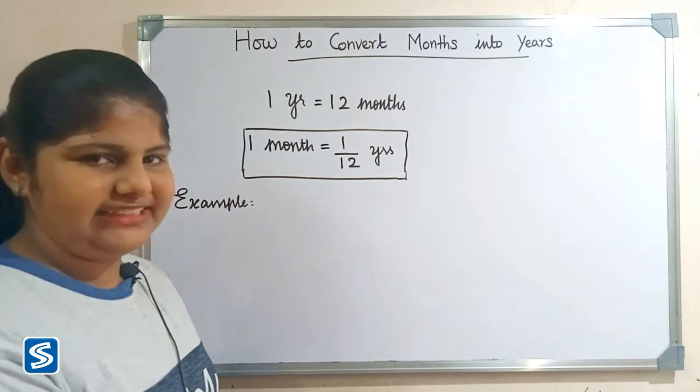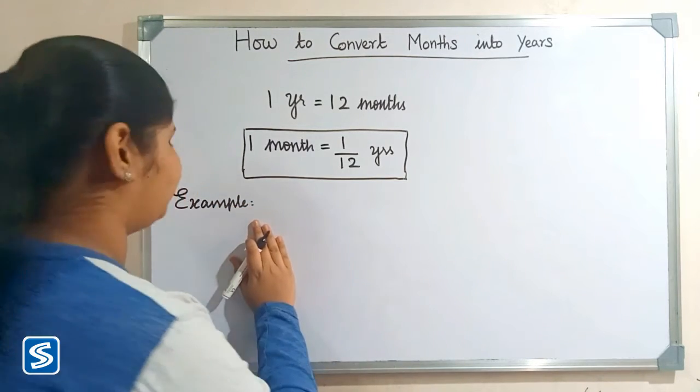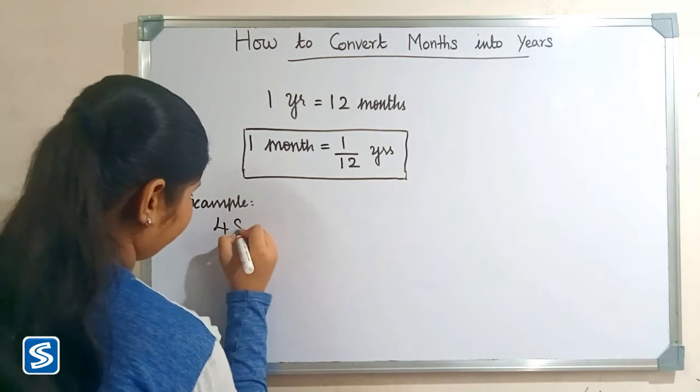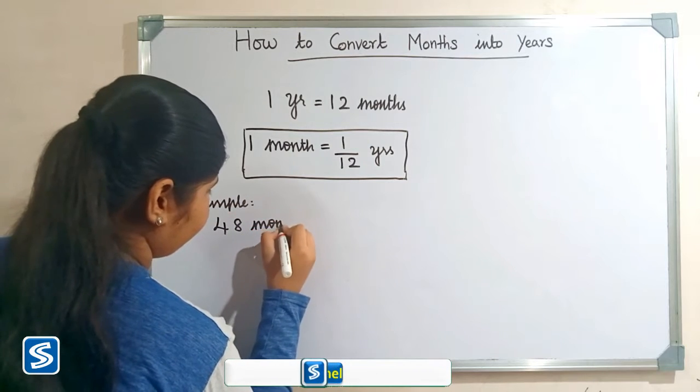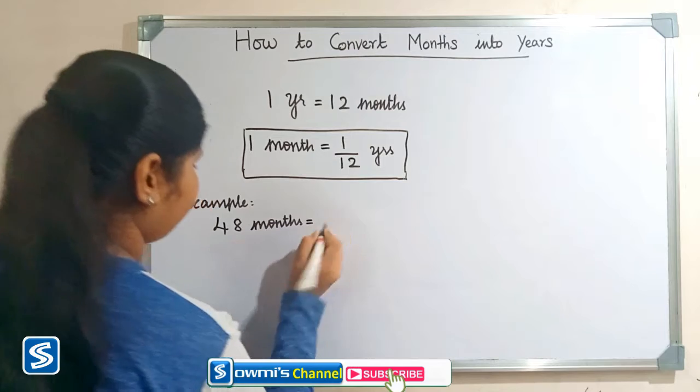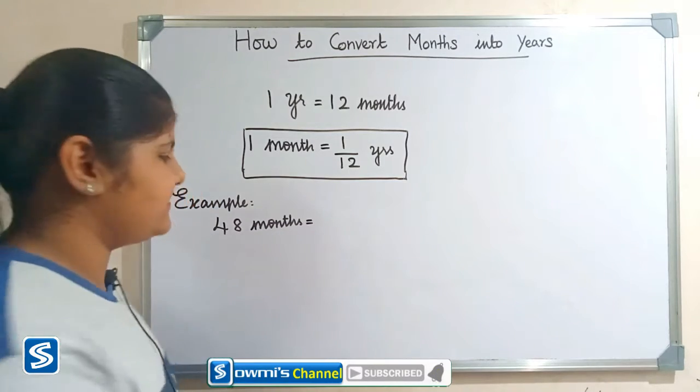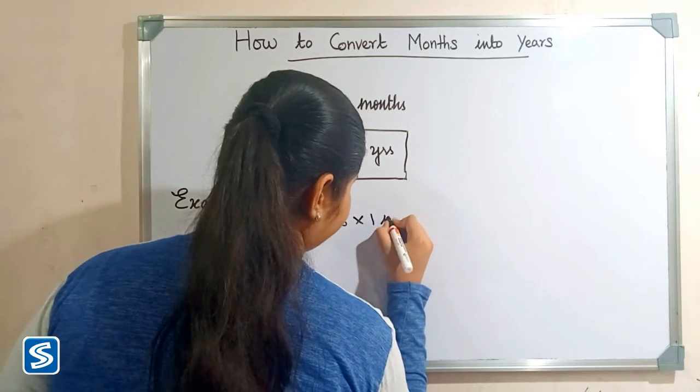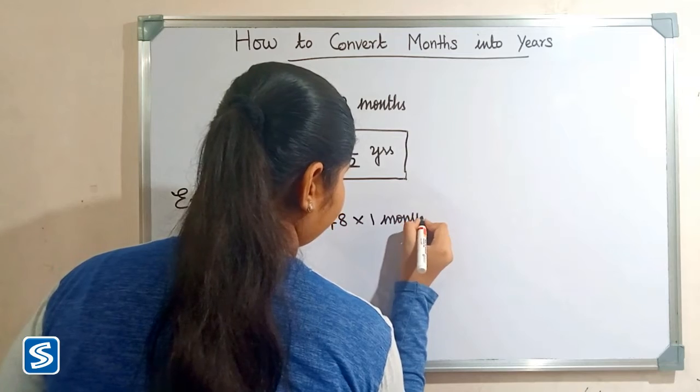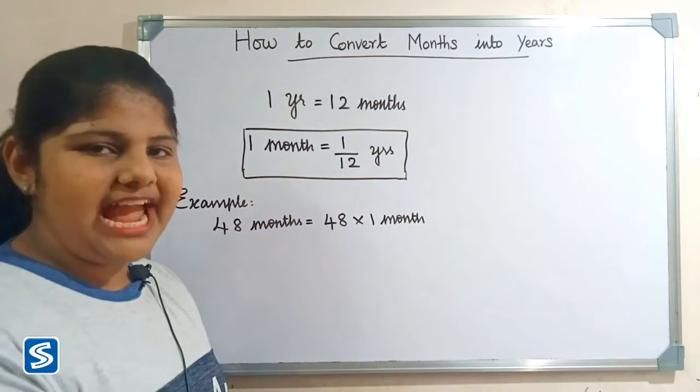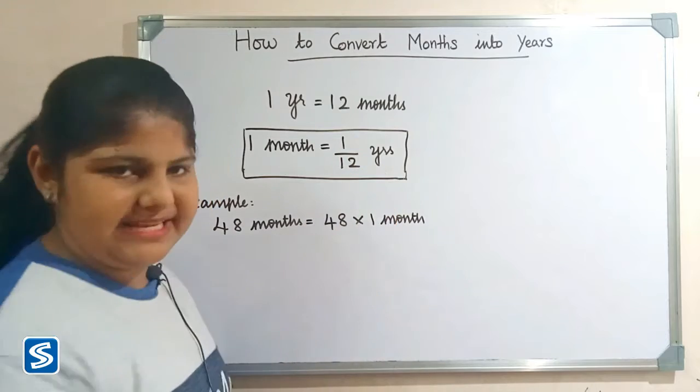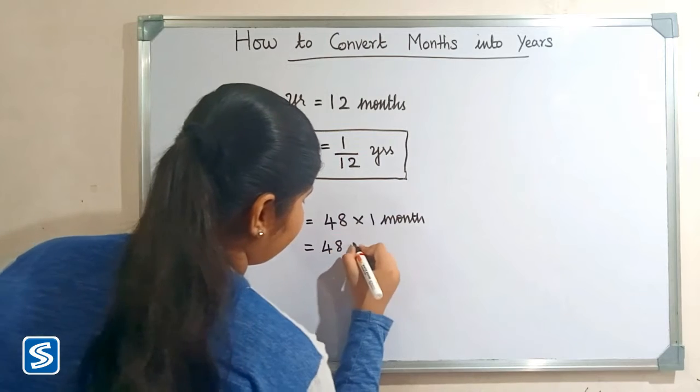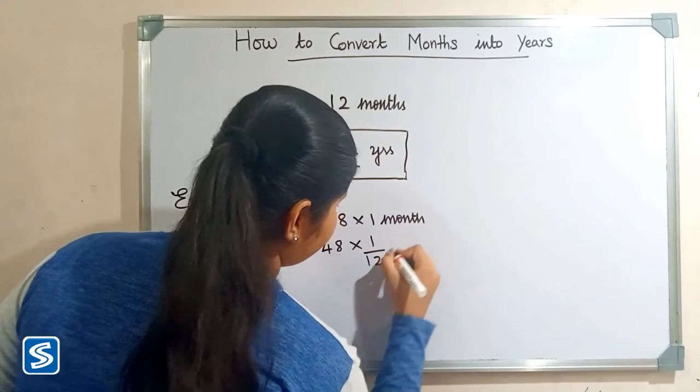For example, find how many years are there in 48 months. 48 months can be written as 48 × 1 month. Now we have to substitute 1/12 years in the place of one month. So, 48 × 1/12 years.